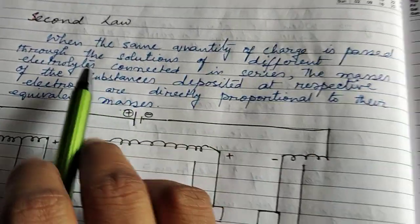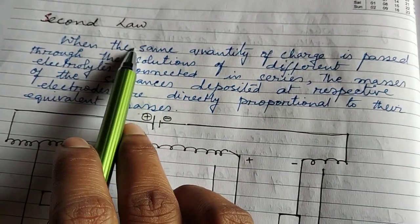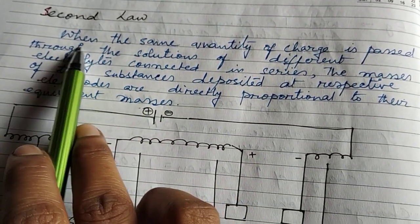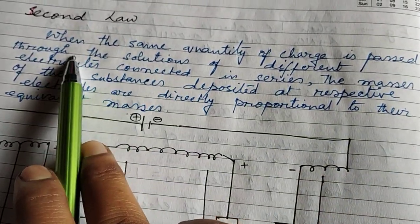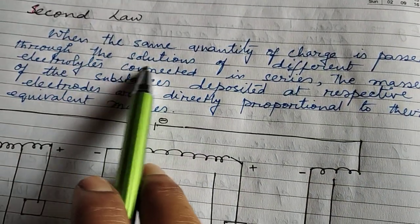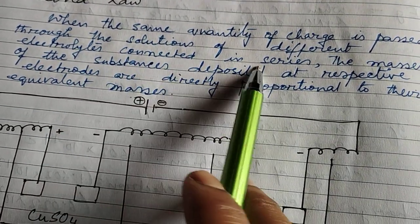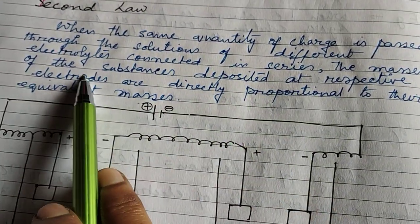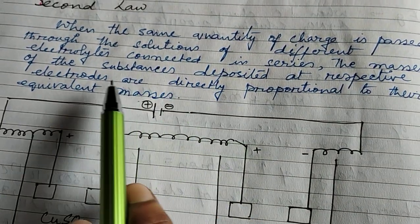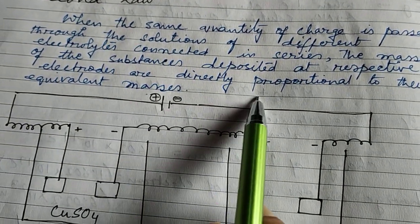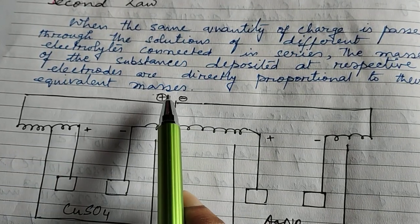The second law of electrolysis states that when the same quantity of charge is passed through the solutions of different electrolytes connected in series, the masses of the substances deposited at respective electrodes are directly proportional to their equivalent masses.